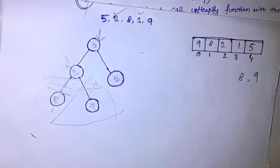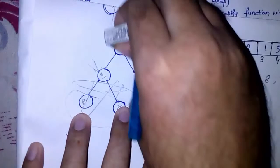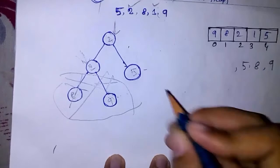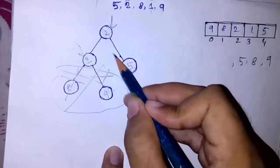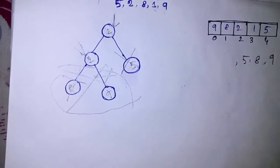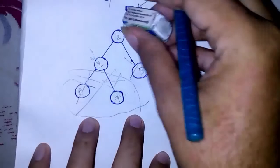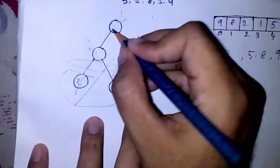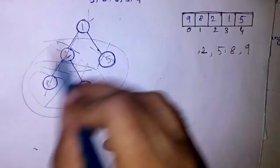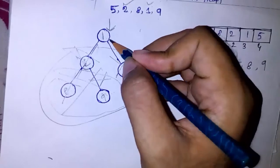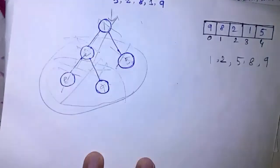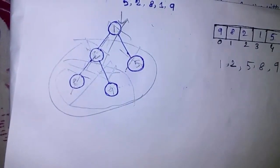Now let's delete the root node again by interchanging its value with the last leaf node. Five is placed at the sorted portion — another element is sorted. We detach that node and check the heap property — it is satisfied, so no downHeapify is needed. Again delete the root node by swapping with the last leaf node; another element is sorted. Now only one node is left. The leaf node and root node are the same, so we swap and delete. The heap is now empty — the entire array is sorted.